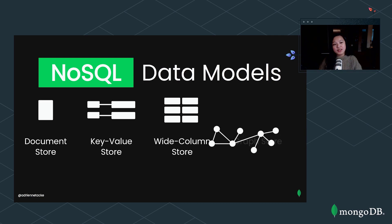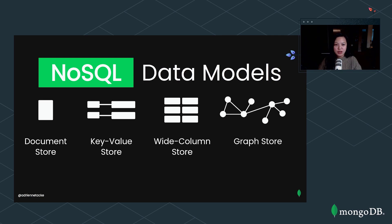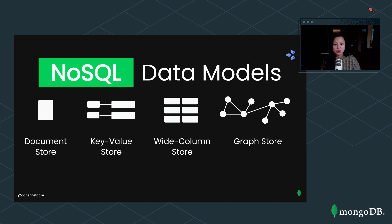And finally there's the graph store, where we store data in nodes and edges. The nodes store the entities — the people, places, and things we want to keep track of. The edges store the relationships, the verbs that deal with those entities. These are your Neo4j's and Janus graphs.